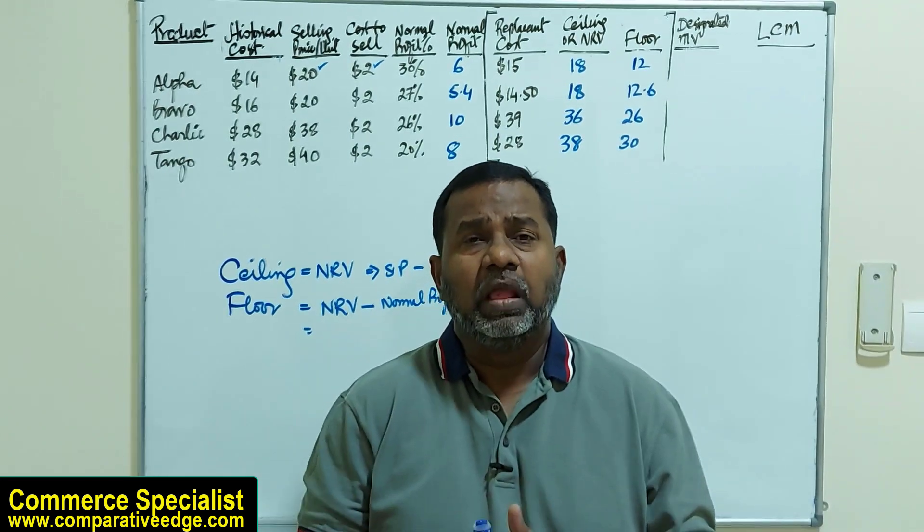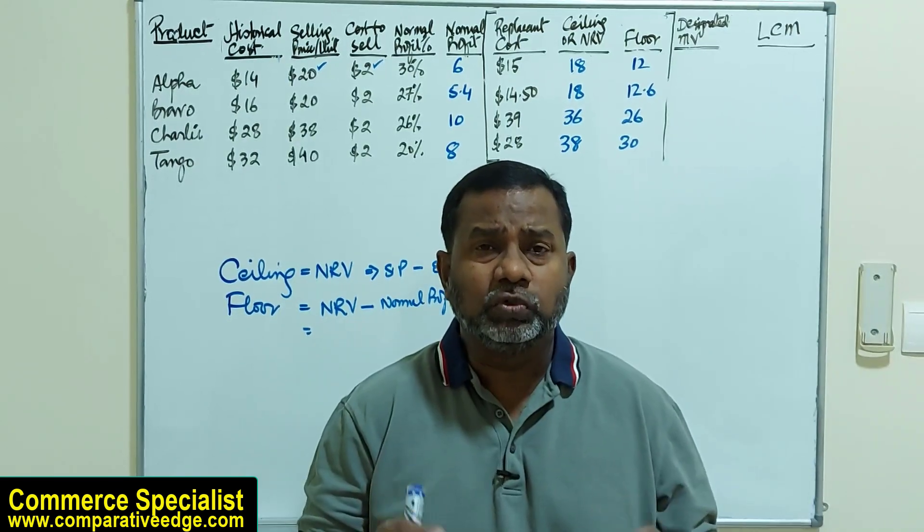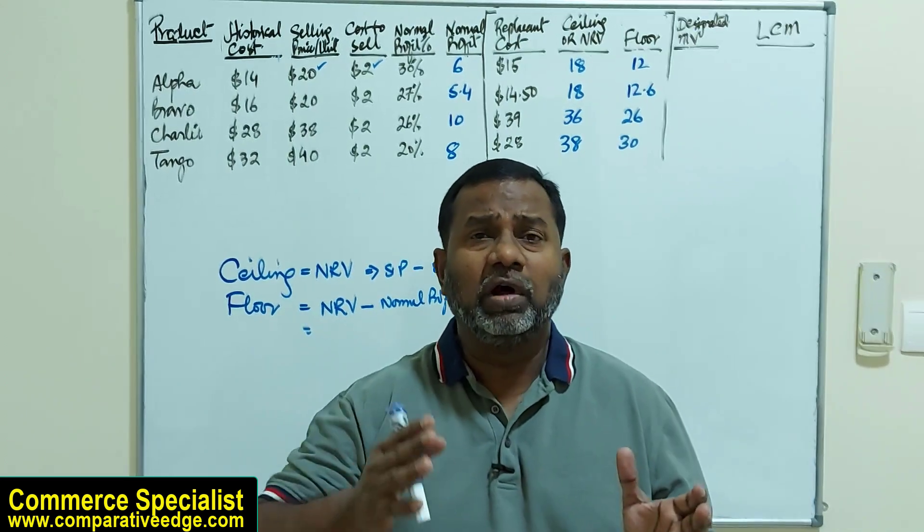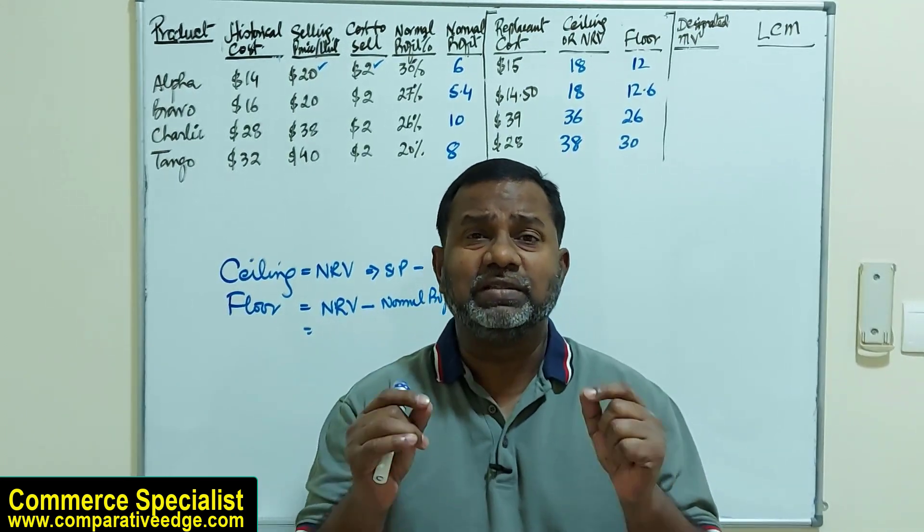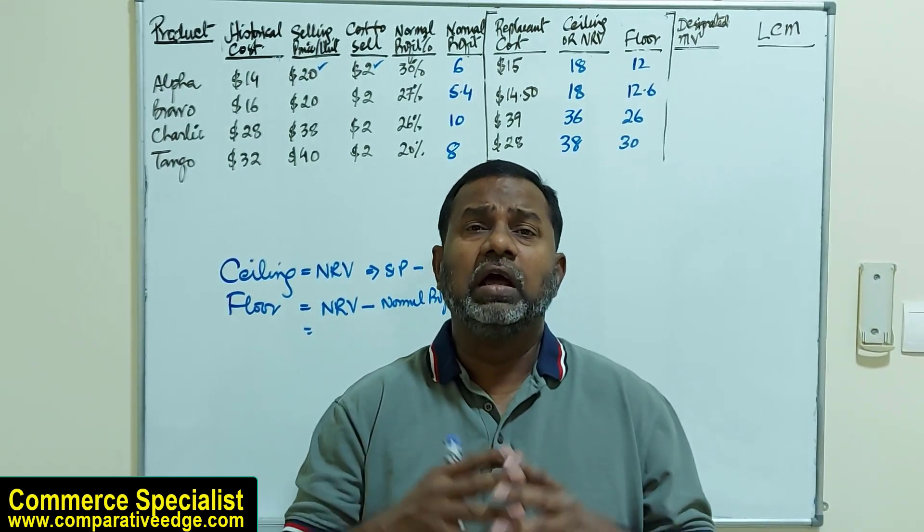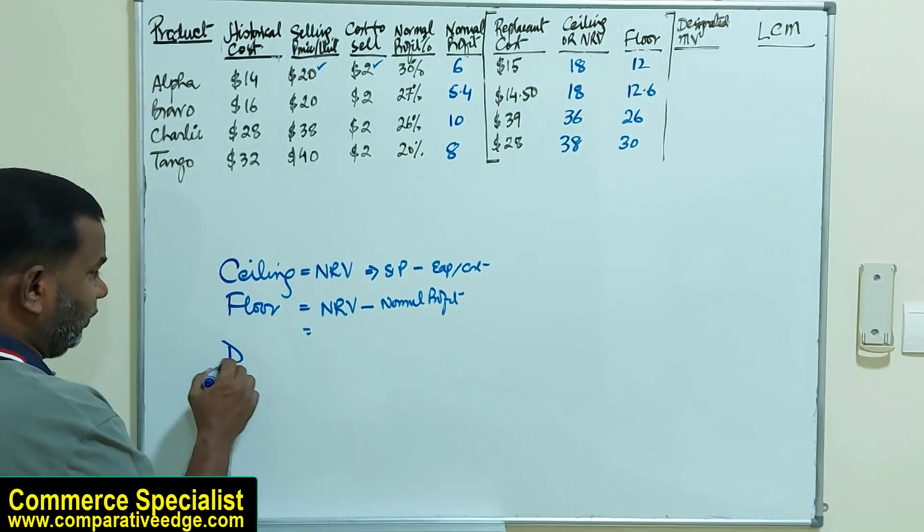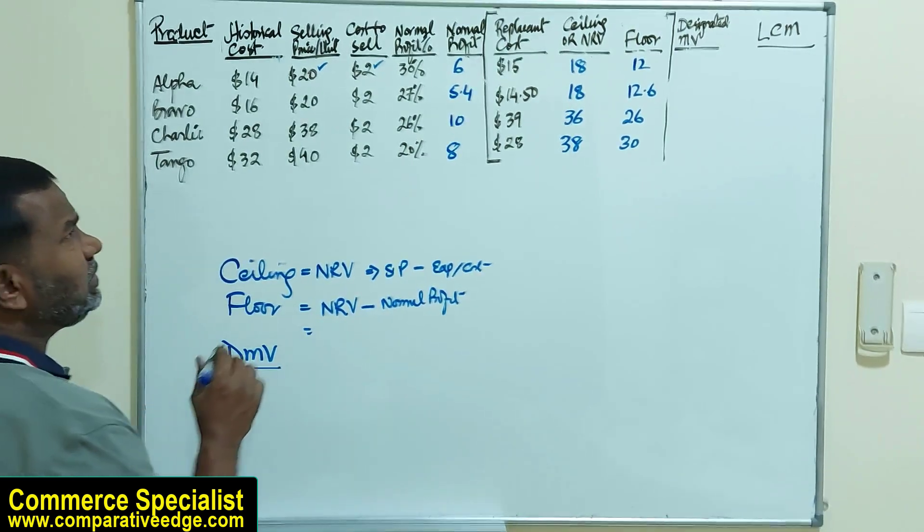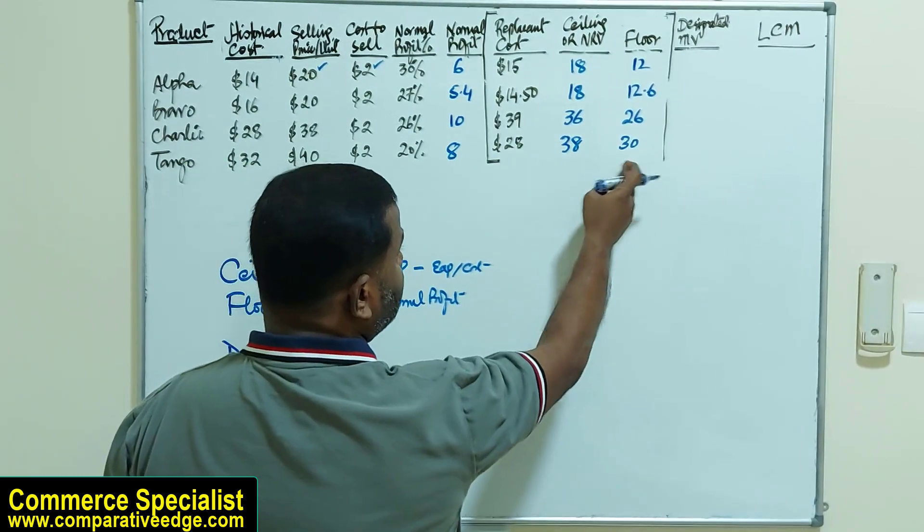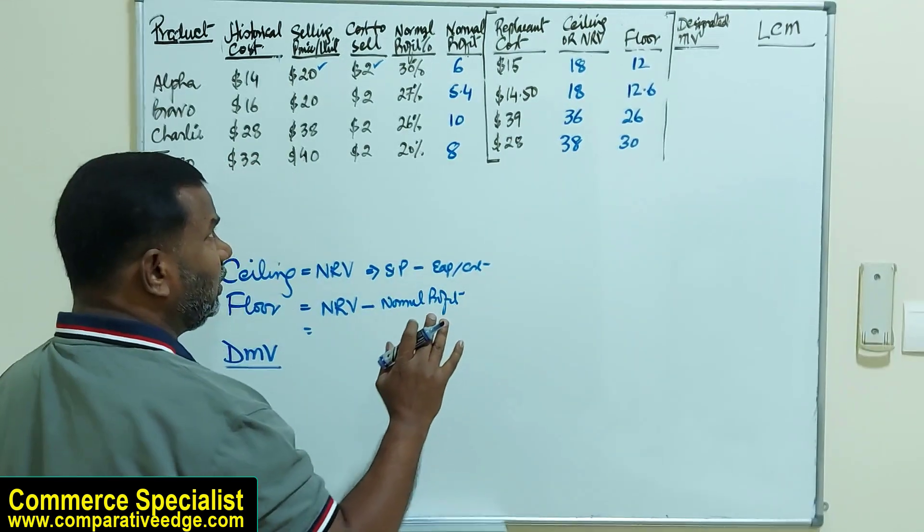As per ASC 330, inventory is to be valued using LCM, which stands for lower of cost or market value. But here market value means designated market value. To calculate designated market value, we look at replacement cost, ceiling or NRV, and floor, then arrange them in ascending order.